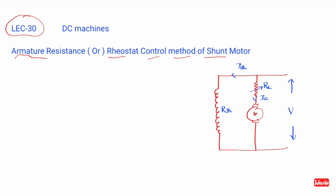If you look at the figure, this is the shunt machine voltage. Current is armature current. This is the shunt field current. The armature is on the left-hand side. The external resistance should be connected in the armature circuit.